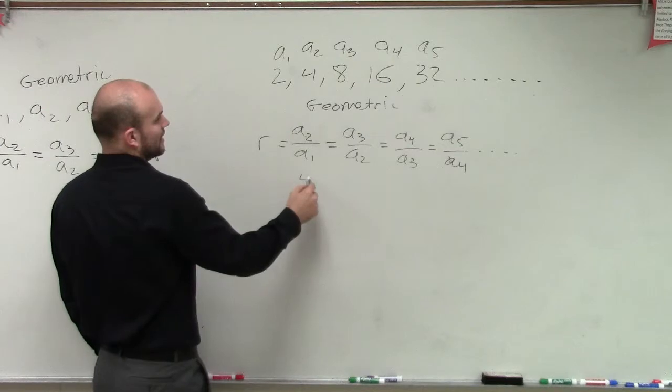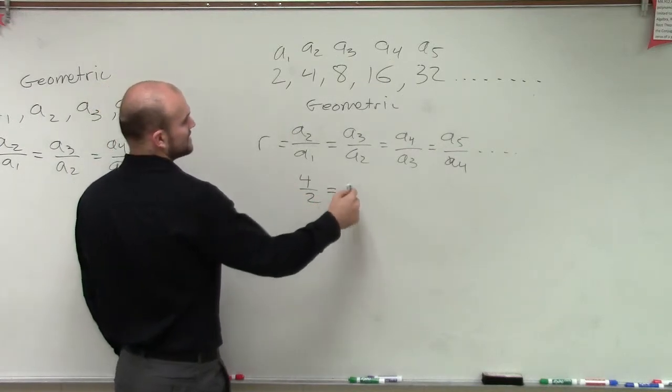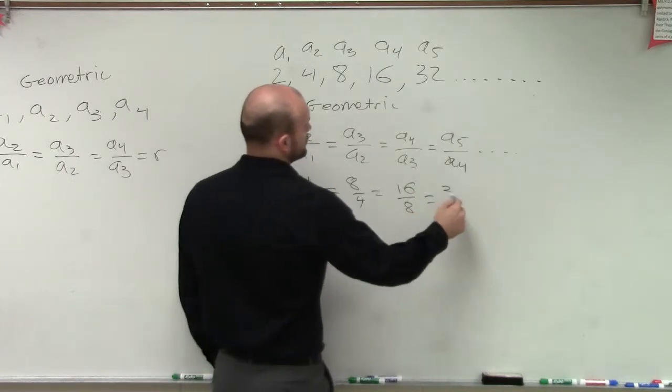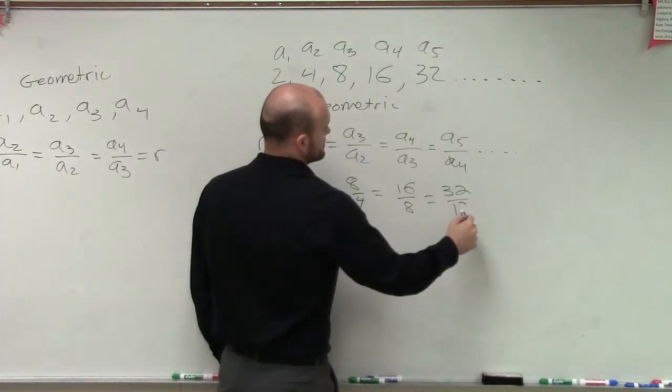So if I did asa 2 over asa 1, I'd have 4 over 2, which then has to be equal to 8 over 4, which then has to equal to 16 over 8, which then has to equal 32 over 16.